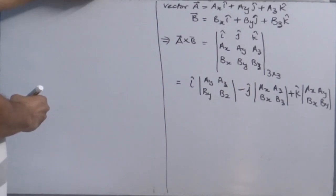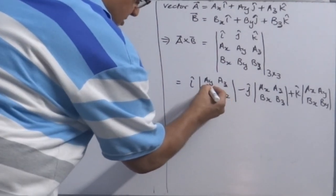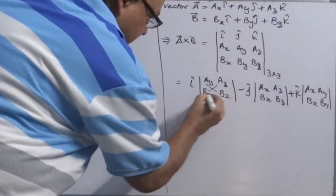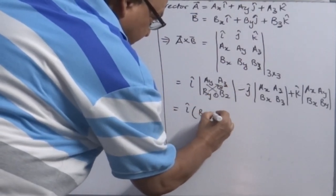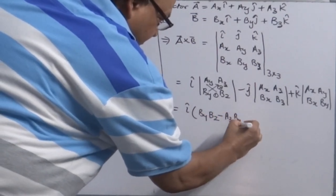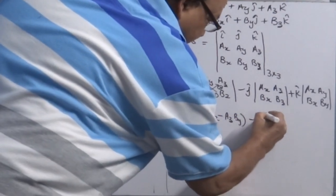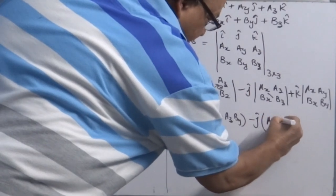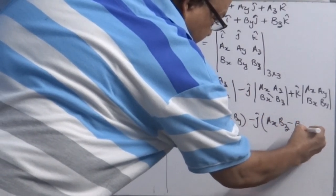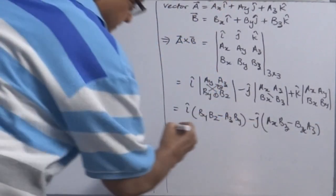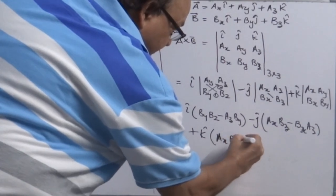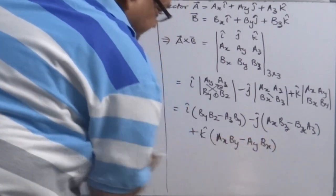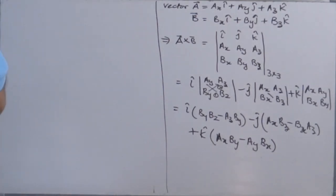Now you have determinants of order 2 by 2. Cross-multiply and subtract: for the i-cap term, you get (Ay·Bz minus Az·By). Then minus j-cap times (Ax·Bz minus Bx·Az). Plus k-cap times (Ax·By minus Ay·Bx). That's how you get the final vector product, and you can see the resultant of A cross B is again a vector quantity.